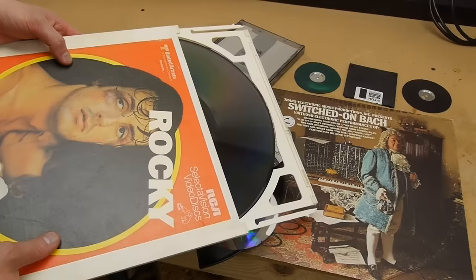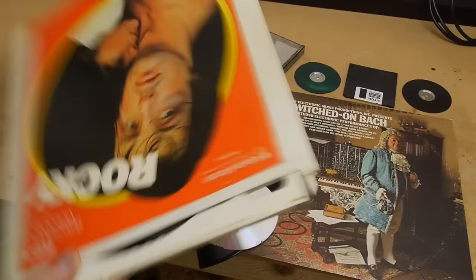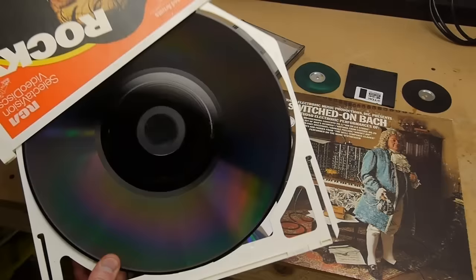The disk comes in this plastic caddy and you put this whole caddy in the machine and then the machine would open it up and pull out this basically video phonograph. It's an analog device.